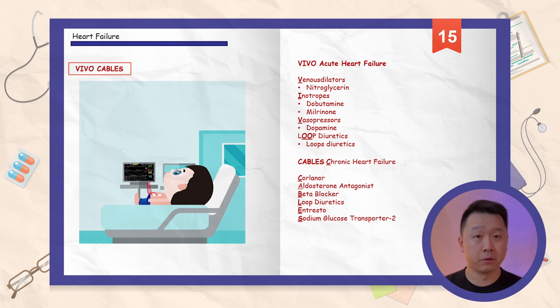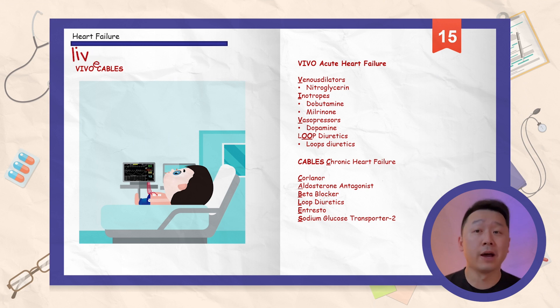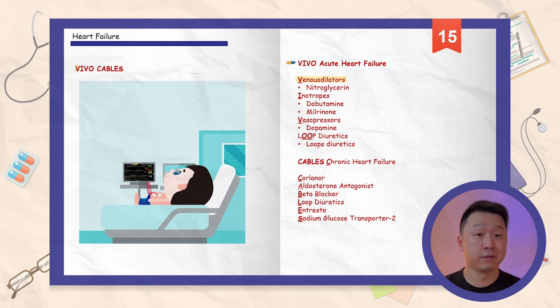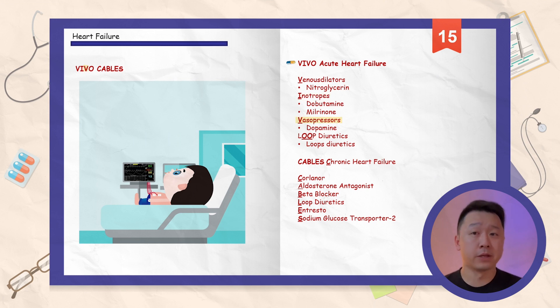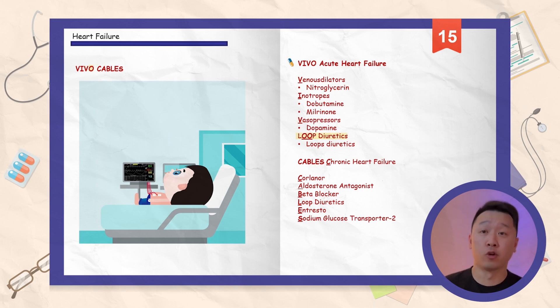We will now cover the treatment algorithm using an acronym: VIVO CABLES. VIVO, from the Latin 'vivare' meaning to live, applies to acute decompensated heart failure. V stands for venous dilators, which includes nitroglycerin; I for inotropes, which includes dobutamine and milrinone; the second V for vasopressors, which includes dopamine; and O for loop diuretics.